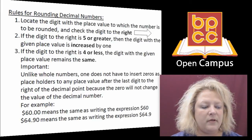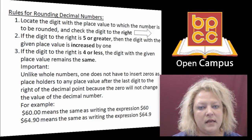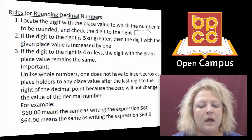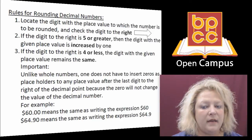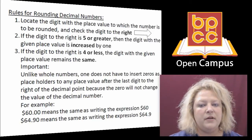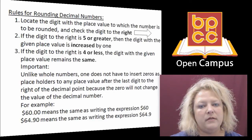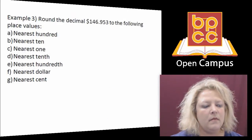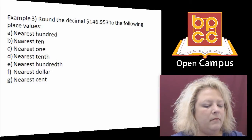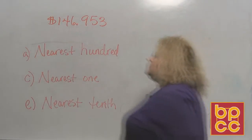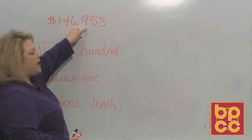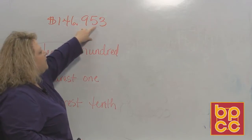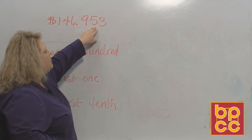For example, $60 is the same thing as writing 60 without the .00 behind it. $64.90 — you can also drop that last zero off and write 64.9. They both mean the same thing. So we're going to go to the board and I'm going to use one of these with money and we're going to round to three different place values. We have this decimal: $146.953 — that's 953 thousandths.